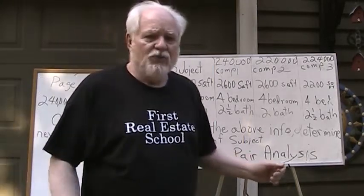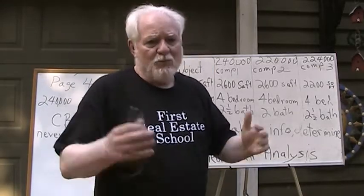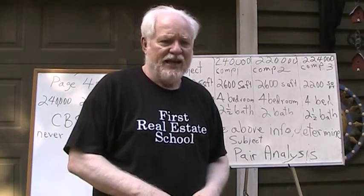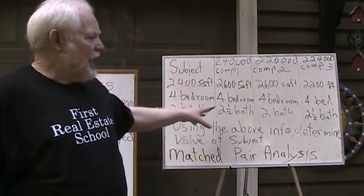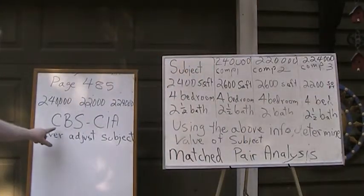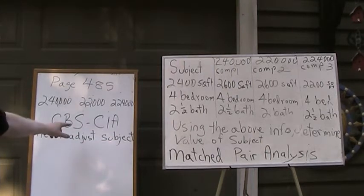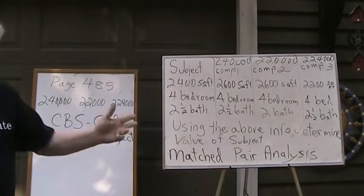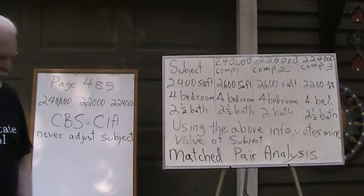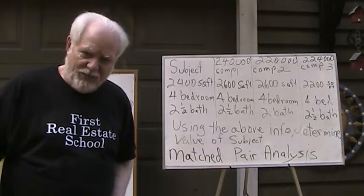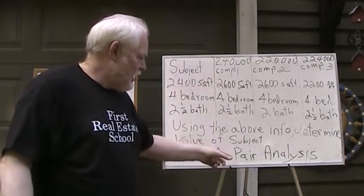In real life, we find different square feet, different features — like maybe a double garage, patio, or something of that nature. In class, I teach my students a thing called CBS CIA. That stands for: if the comparable is better, we subtract value from the comparable; if the comparable is inferior, we add value to the comparable. And I admonish my students to never, never adjust the subject — always adjust the comparable.